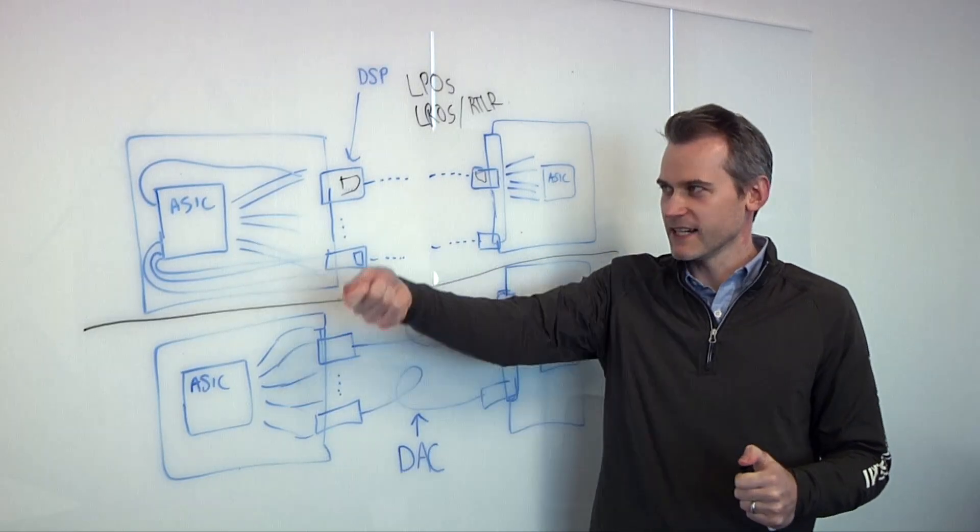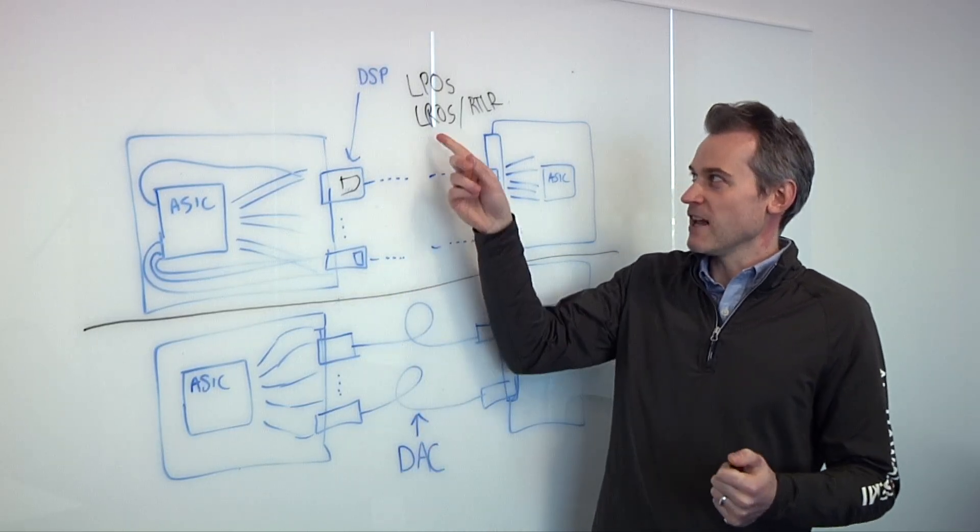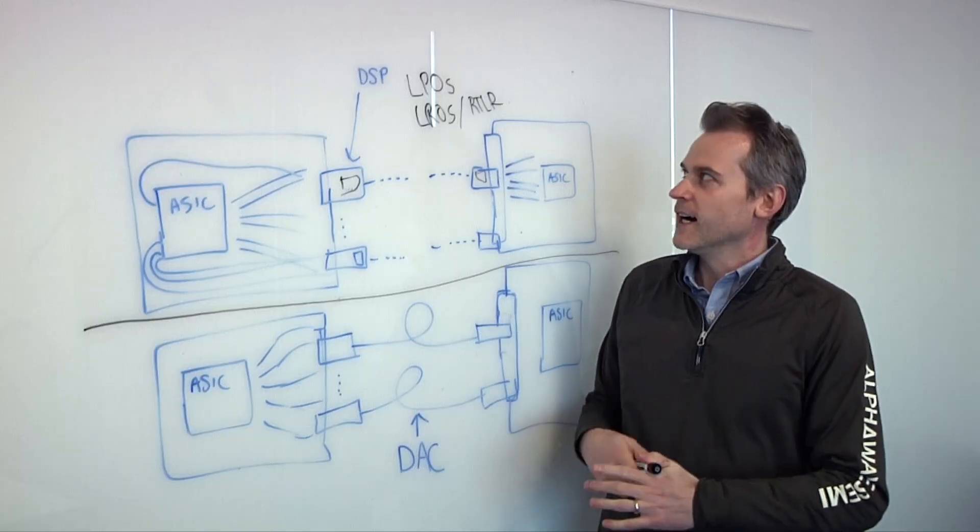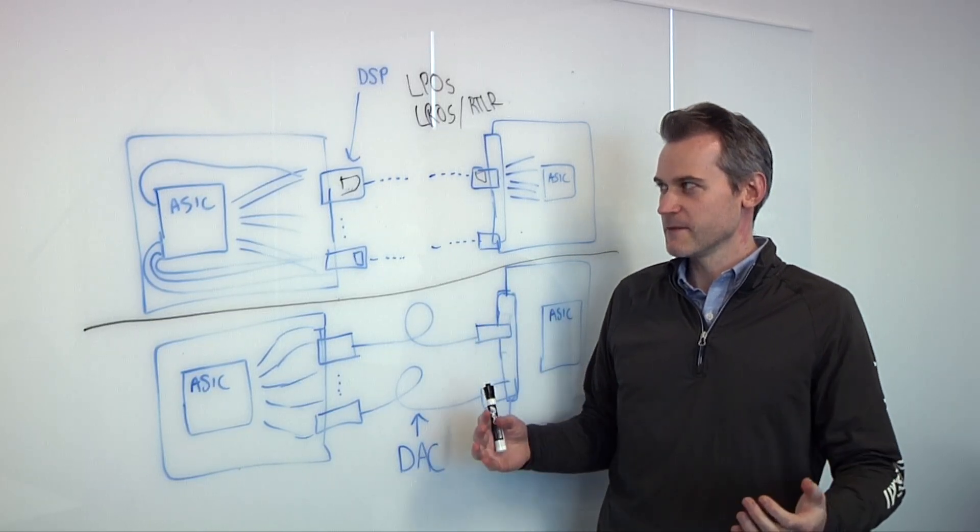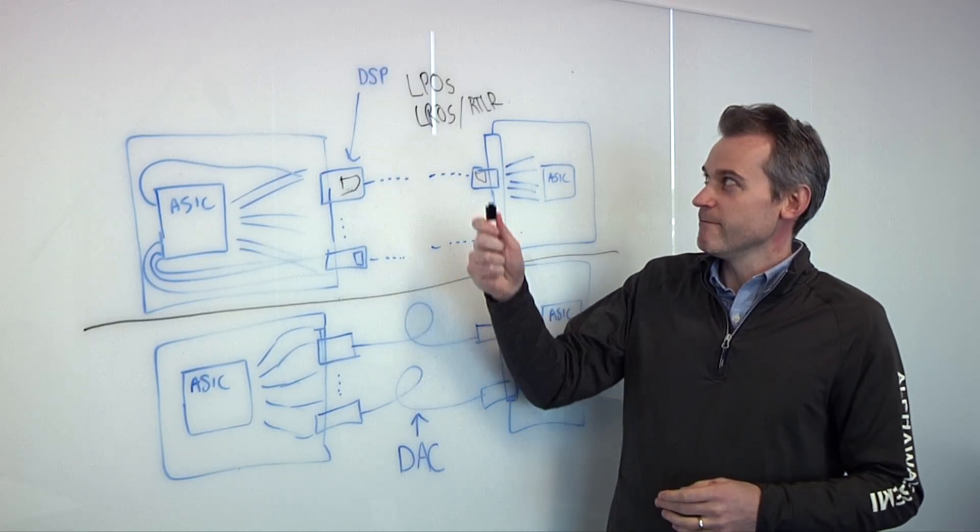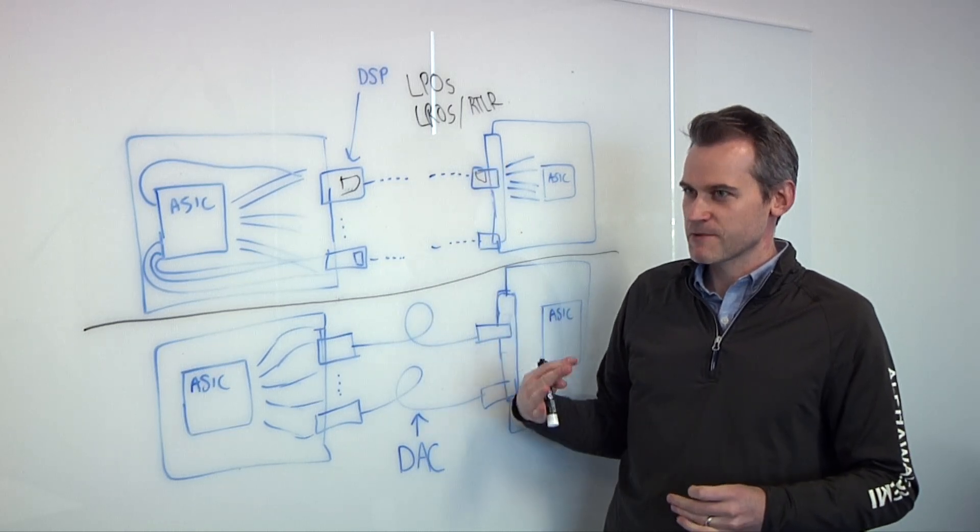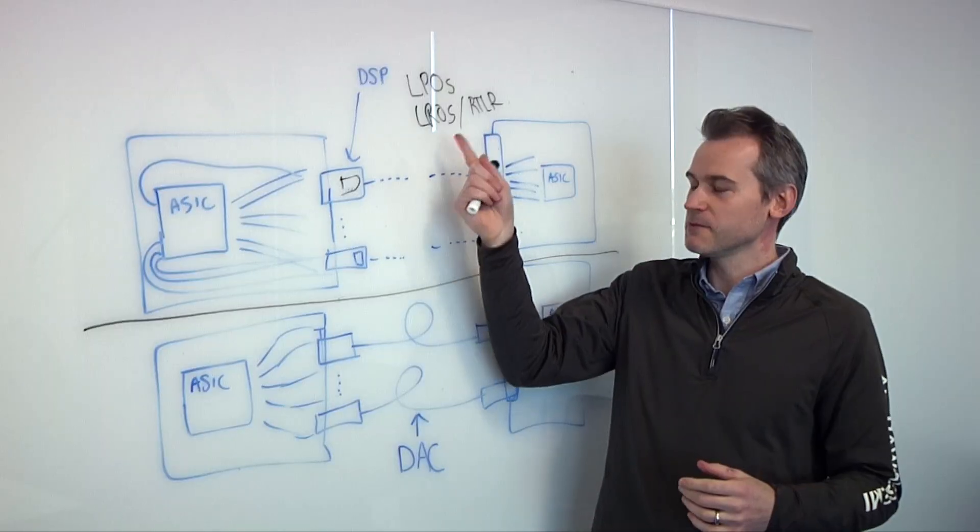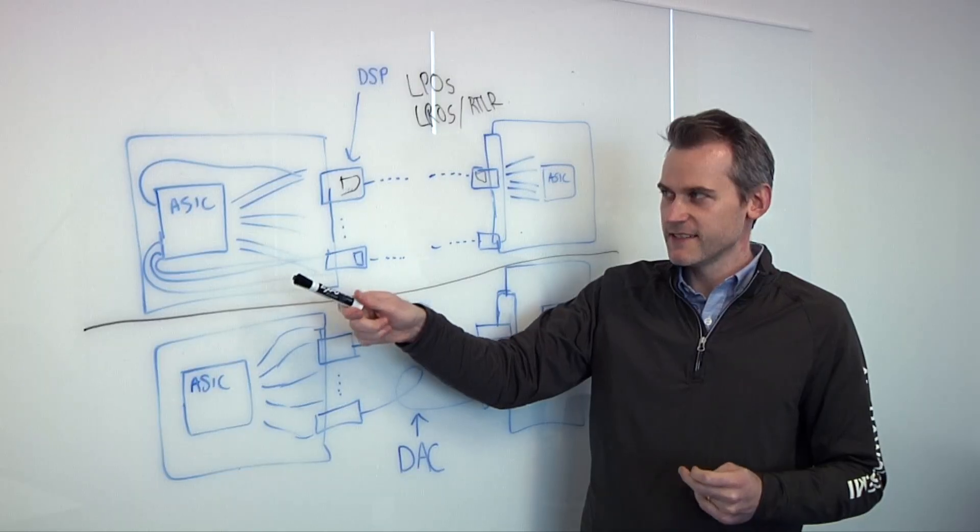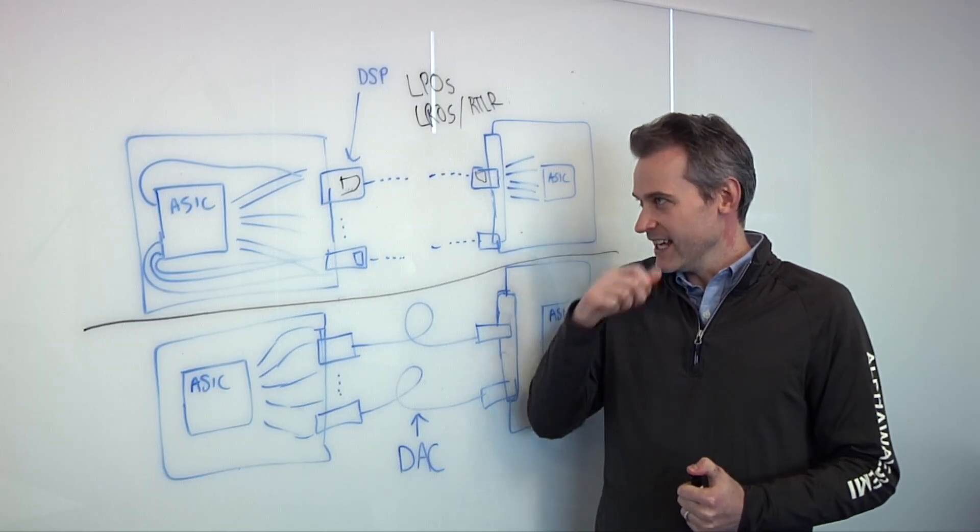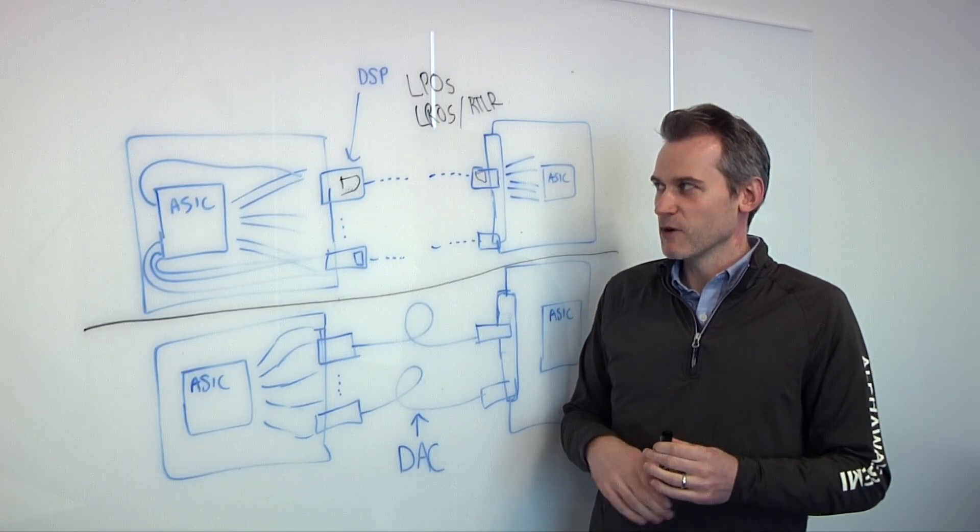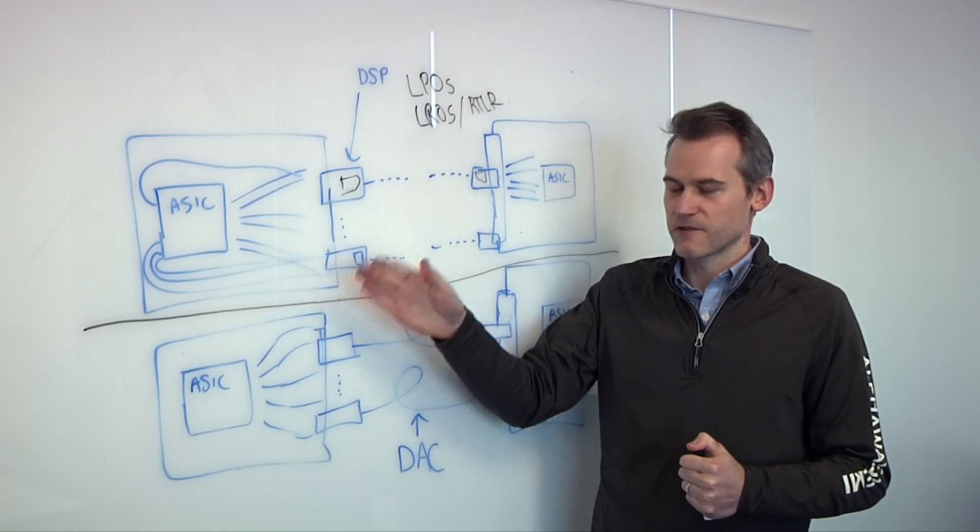The trade-off between all these different options is power versus manageability and support for interoperability. DSPs, you can just plug it into any port and it really should work. LROs probably need a little more massaging, finessing to get a solid interoperable link, but it's for sure achievable. Alpha Wave Semi has demonstrated interoperability over LROs and LPOs at live trade shows. The final option, the lowest power consumption but probably heaviest lift for widespread support is LPOs. You really need a very sophisticated SERDES on both sides, very tunable. It's kind of a sidestep from co-packaged optics. So it requires very intricate tuning on both the transmitter side and the receiver side.